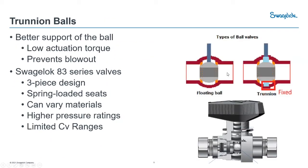There are really two types of ball designs: floating ball and trunnion ball. With a floating ball, it's supported only on the top. A trunnion ball is shaped like a spool piece with a bushing on top and bottom, supporting the ball on both sides. This actually lowers your actuation torque and can prevent blowout if you're concerned about overpressurization — because it's fixed in two spots, it resists pressure surges.